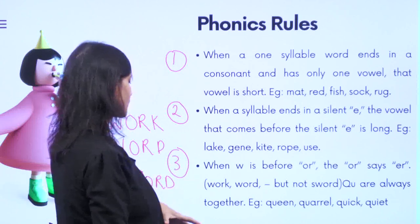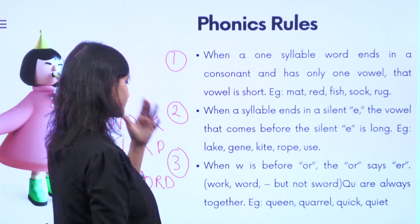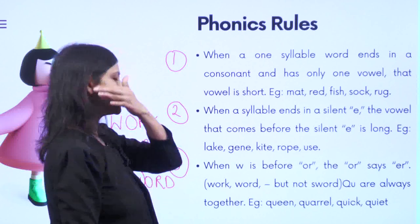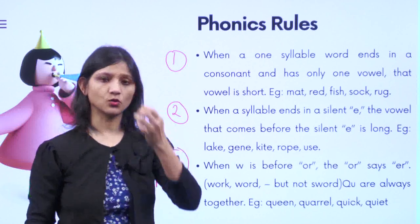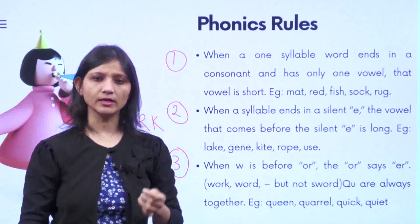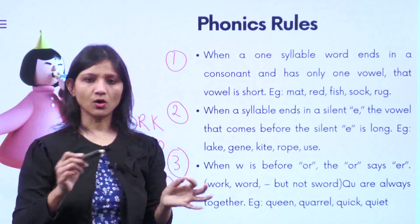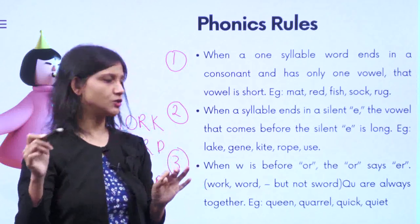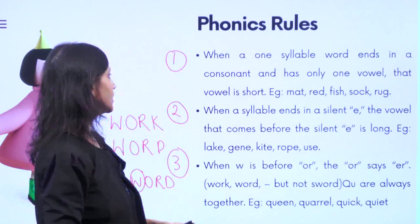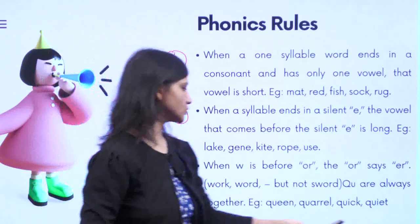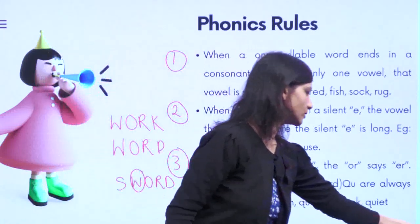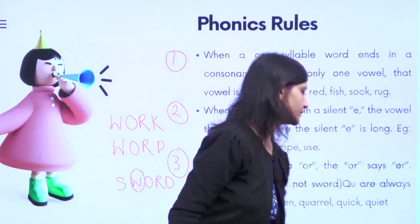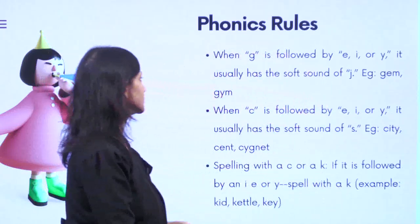Rule four: Q and U are always together. Queen, quiet, quip — you will always find Q and U together. Those are the rules we've seen so far. Let's move on and see the next rules.